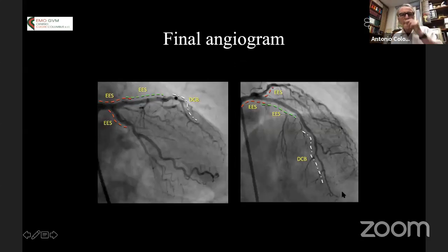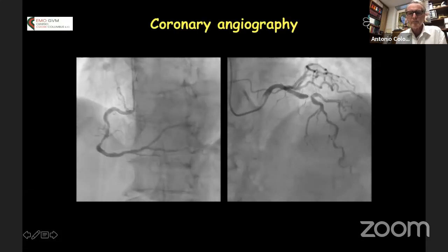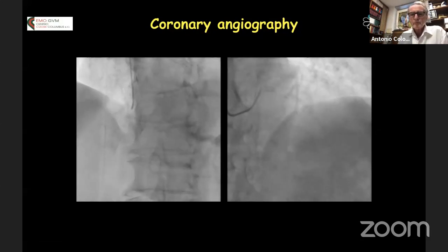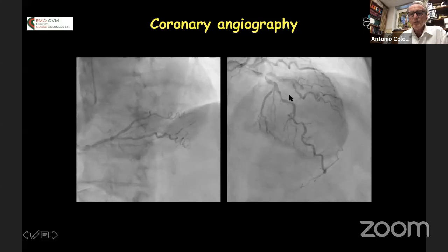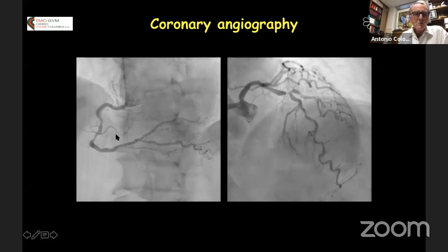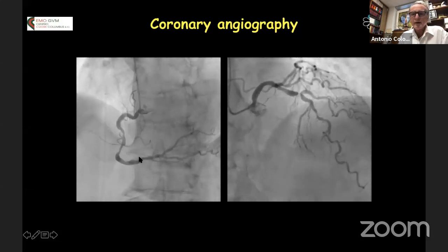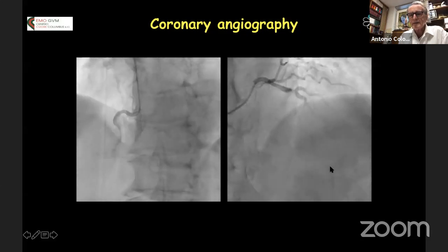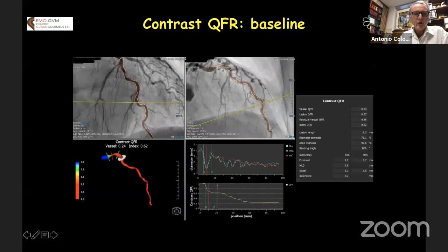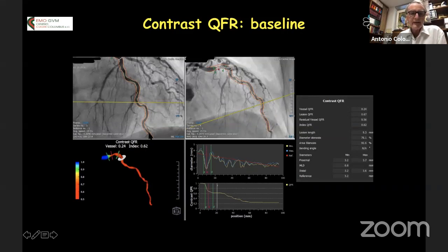Another example: bifurcation left main, focal LAD lesion proximally, and diffuse disease distally. Of course, we are not trying to take stenting away from the left main and proximal LAD — besides a drug-eluting stent in the proximal LAD, all the rest is treated with a drug-coated balloon. A more extreme example: focal lesion at the bifurcation of a big diagonal, mild disease in the right coronary artery, and diffuse disease in the distal LAD. We did a contrast QFR, which was about 0.92 — similar to FFR.